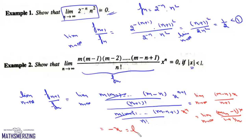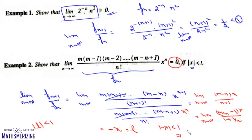Now this is your l. The value of this limit l will satisfy mod l less than 1, that means mod of minus x less than 1, or we can say when mod x is less than 1, which is exactly what we needed to prove.